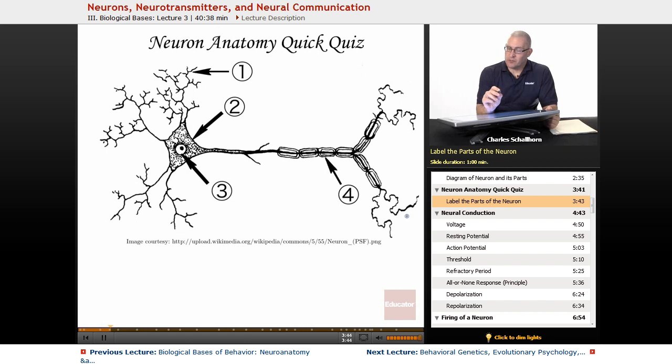So, quick quiz. How much were you paying attention? Number one here, these receiving neurons, what is that going to be called? Dendrite.